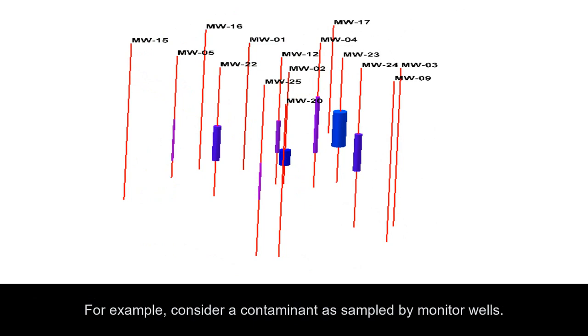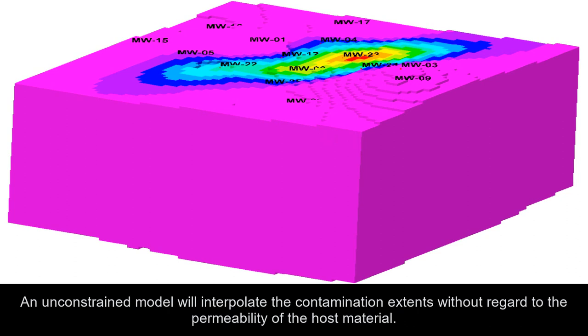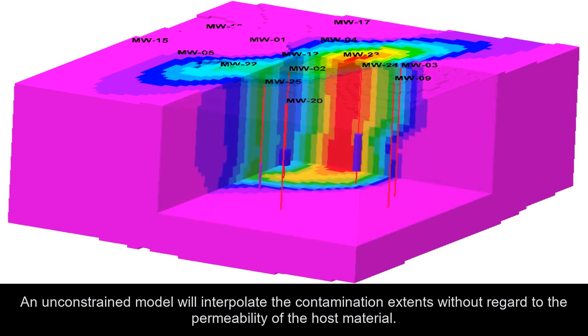For example, consider a contaminant as sampled by monitor wells. An unconstrained model will interpolate the contamination extents without regard to the permeability of the host material.